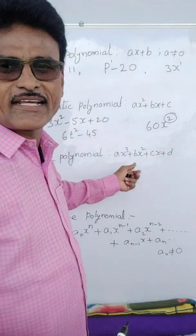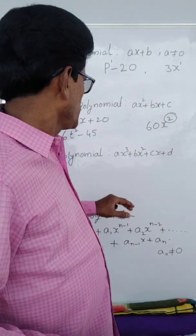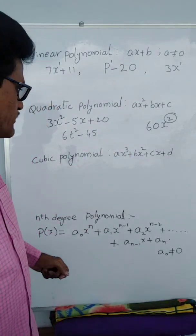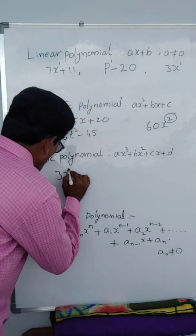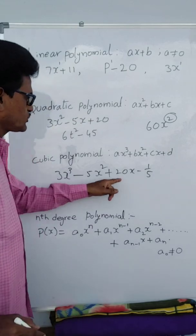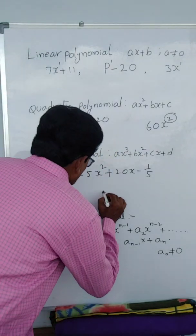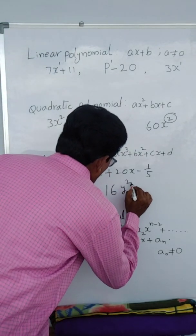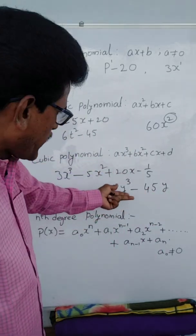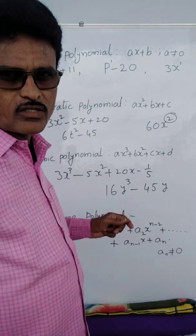Cubic polynomial means third degree polynomial. General form: ax³ plus bx² plus cx plus d. Here a, b, c, d are constants and condition: a not equal to 0. Example: 3x³ minus 5x² plus 20x minus 1/5 — that is 4 terms. With two terms: 16y³ minus 45y — only two terms, y is the variable. This is also a cubic polynomial — third degree, highest power three.